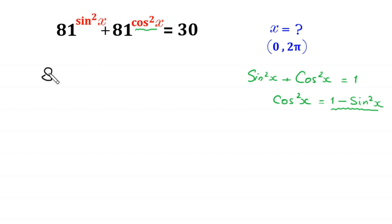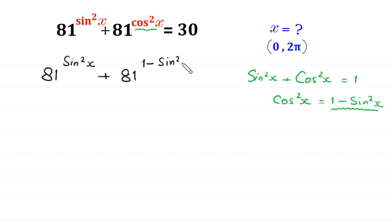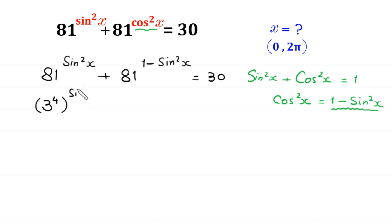We write 81 to the power sin²x plus 81 to the power (1 - sin²x) is equal to 30. Now we can write 81 as 3 to the power 4, so this becomes (3⁴) to the power sin²x plus (3⁴) to the power (1 - sin²x) equals 30.